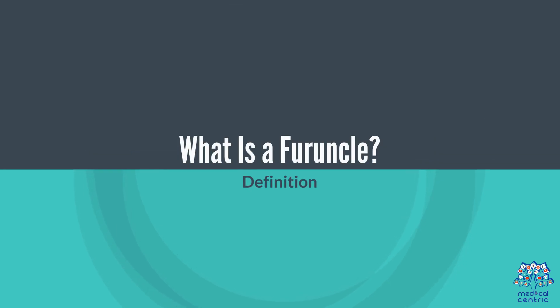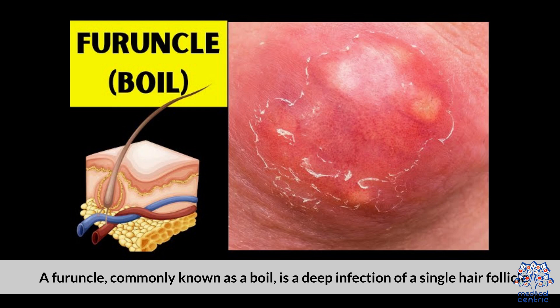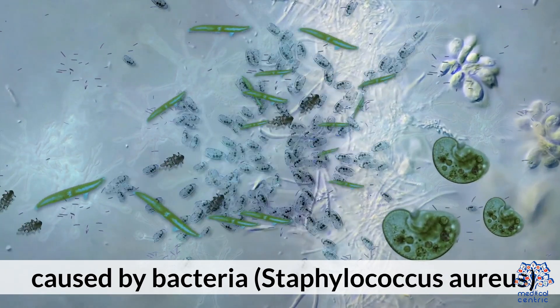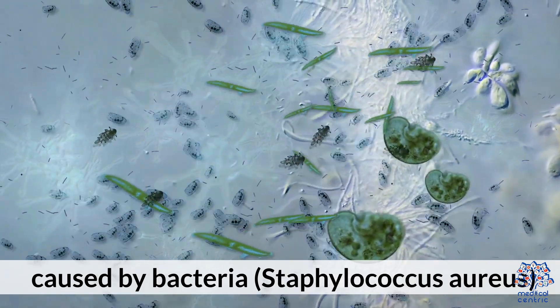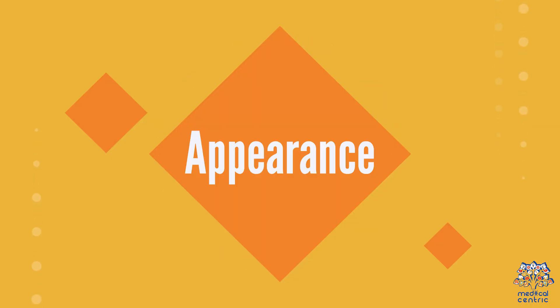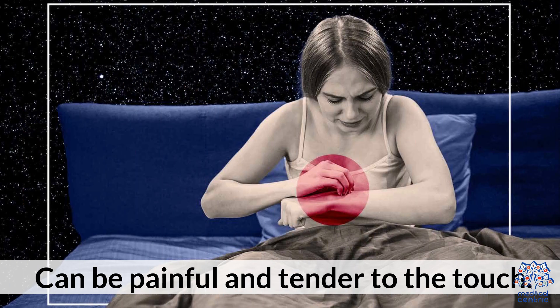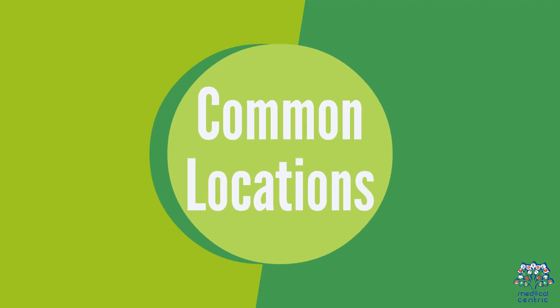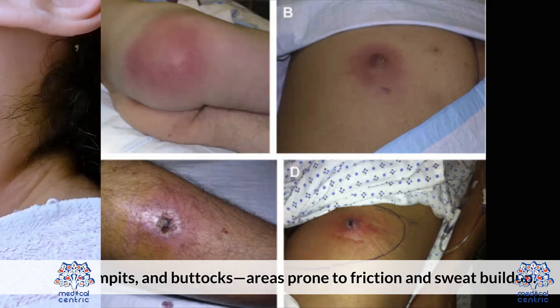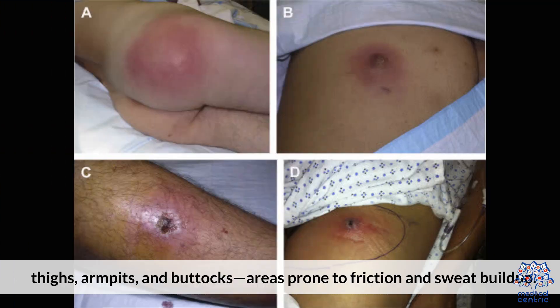What is a farruncle? A farruncle, commonly known as a boil, is a deep infection of a single hair follicle caused by bacteria, Staphylococcus aureus. It starts as a red, swollen lump that fills with pus over time, and can be painful and tender to the touch. Common locations include the neck, face, thighs, armpits, and buttocks — areas prone to friction and sweat buildup.